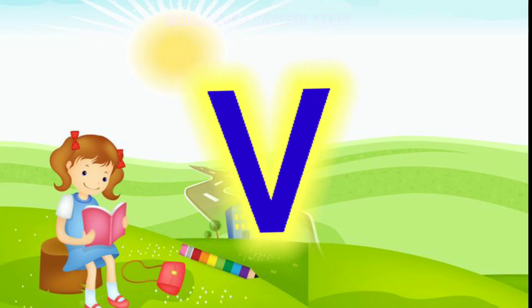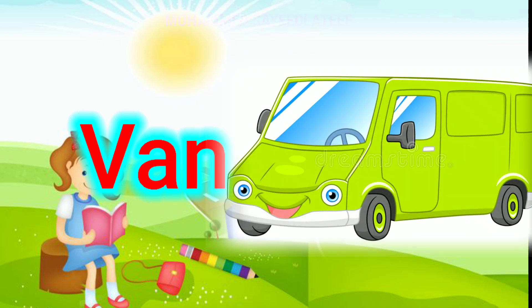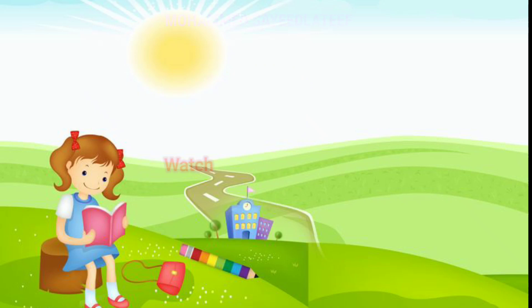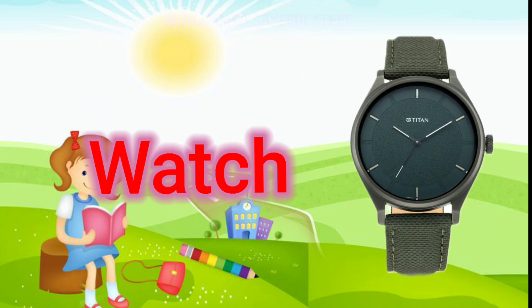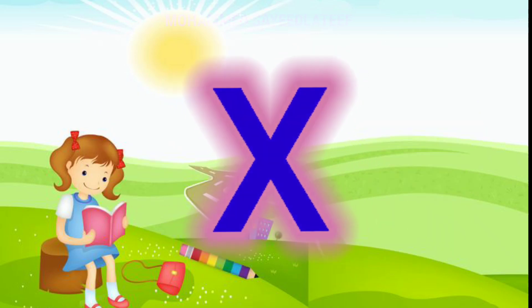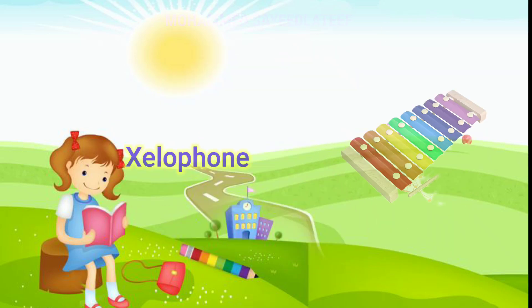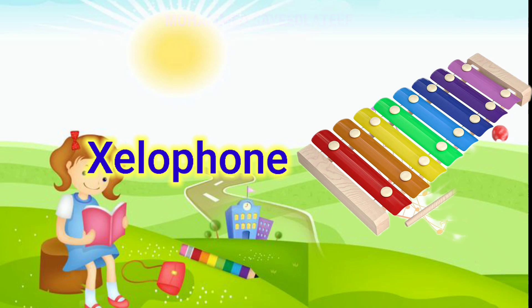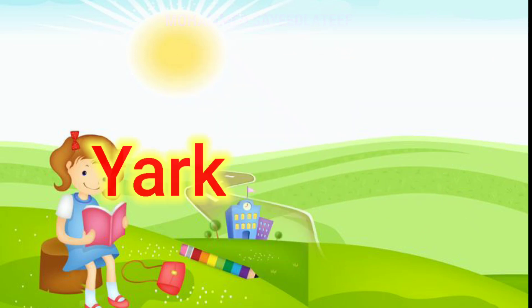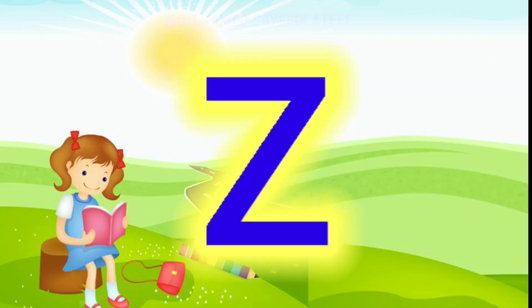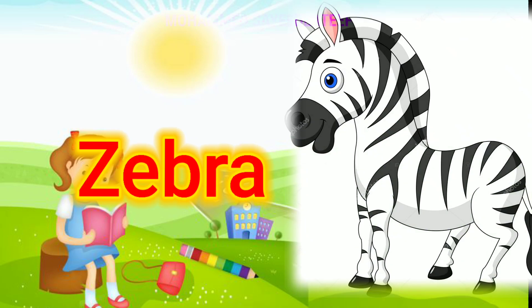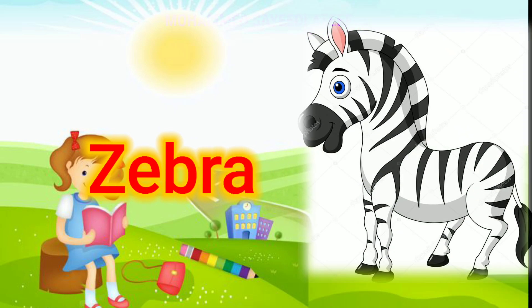U for umbrella, V for van, W for watch, X for xylophone, Y for R, Z for zebra.